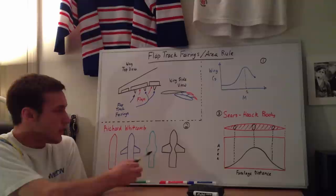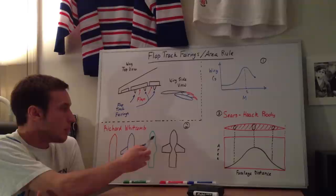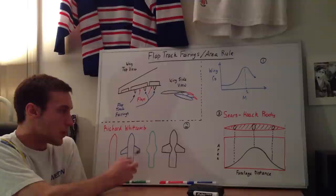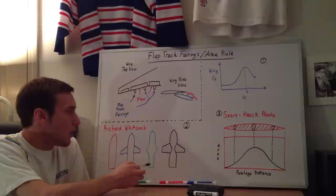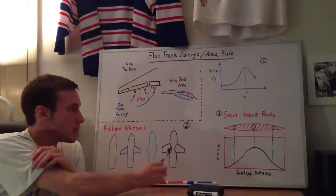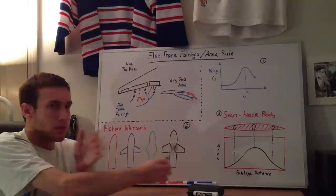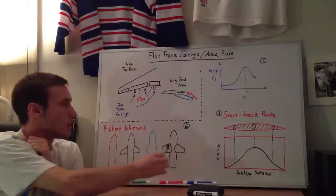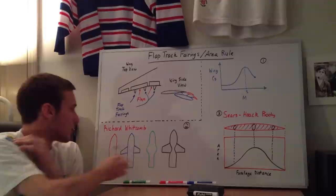Then when he changed the shape so that there were no more wings but there were bulges on it — where the bulges added the same amount of volume to the cross-section that the wings did — these two shapes had the same wave drag. Then he decreased the area of the fuselage of the bullet-shaped body and added wings to it, and that was found to have approximately the same wave drag as the original bullet-shaped body, because it had the same cross-sectional area distribution.